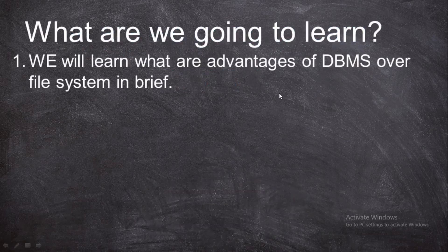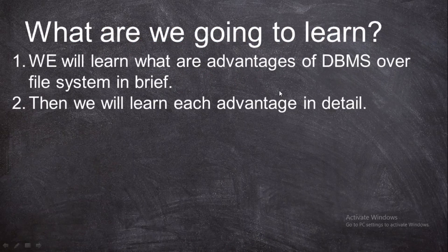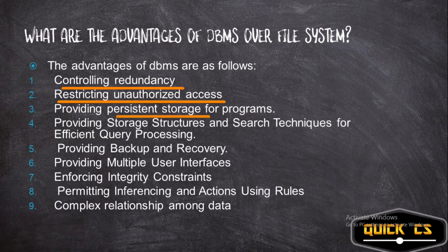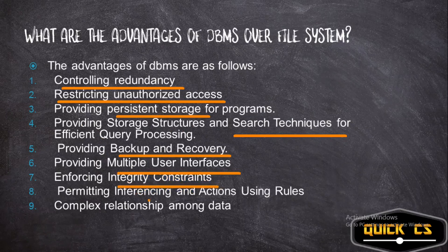There are a total of nine advantages of DBMS over file system: first, controlling redundancy; second, restricting unauthorized access; third, providing persistent storage for programs; fourth, providing storage structures and search techniques for efficient query processing; fifth, providing backup and recovery; sixth, providing multiple user interfaces; seventh, enforcing integrity constraints; eighth, permitting inferencing and actions using rules; and ninth, complex relationships among data.